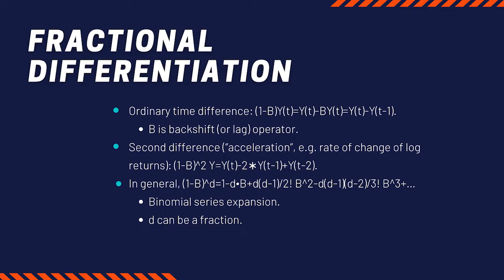What does the ordinary time difference mean? We can introduce a backshift operator to make it more precise. A backshift operator, when it acts on y, makes it into y at t minus 1. B acting on y of t makes it into yt minus 1.